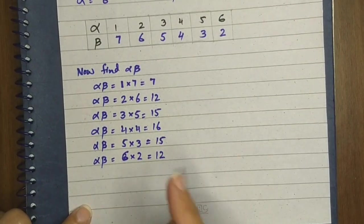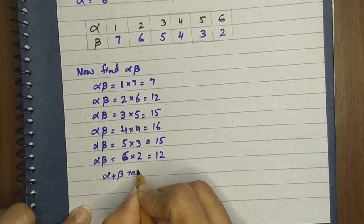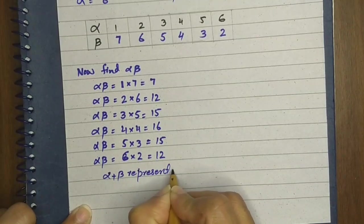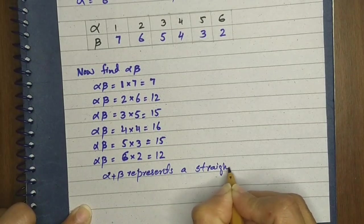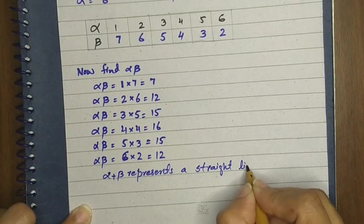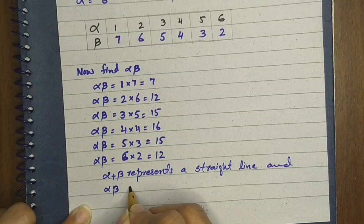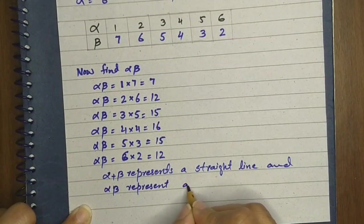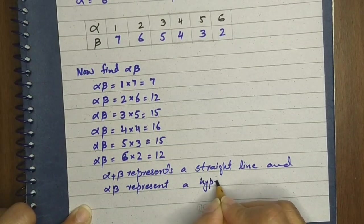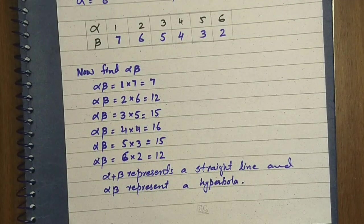Now we can see from the graph that alpha plus beta equals 8 represents a straight line. And alpha times beta represents a hyperbola. This is our answer.